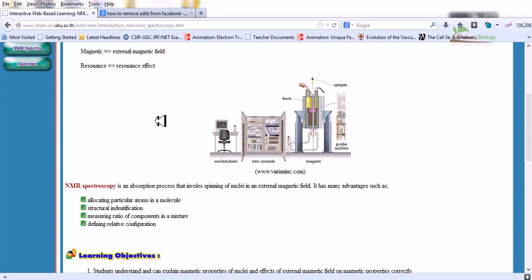NMR spectroscopy is an absorption process that involves spinning of nuclei in an external magnetic field. It has many advantages such as locating particular atoms in a molecule, structural identification of the molecule, measuring ratio of components in a mixture, and defining the relative configuration of the molecule inside the solution. Here you can find the picture of NMR spectroscopy showing the console, magnetic field, and workstation.